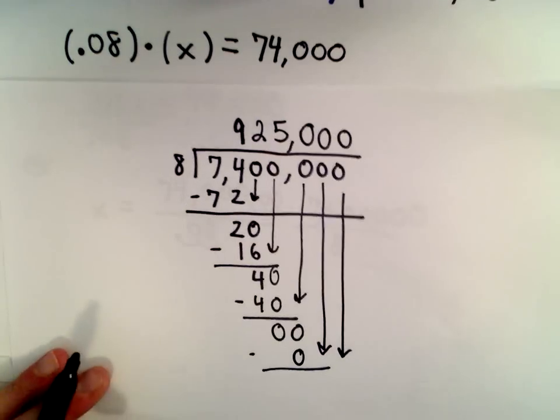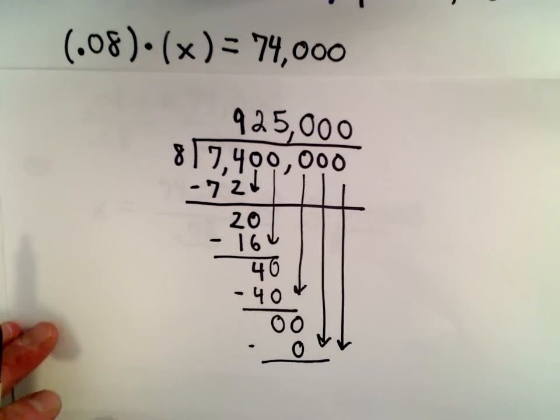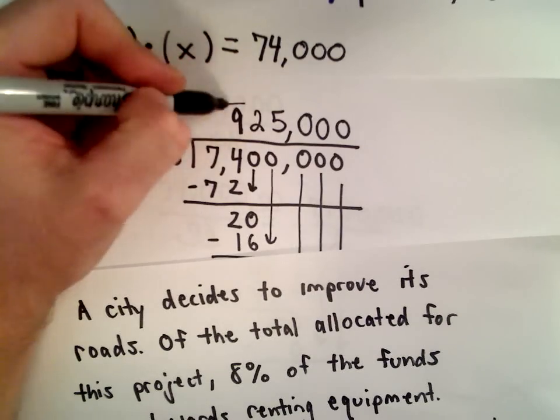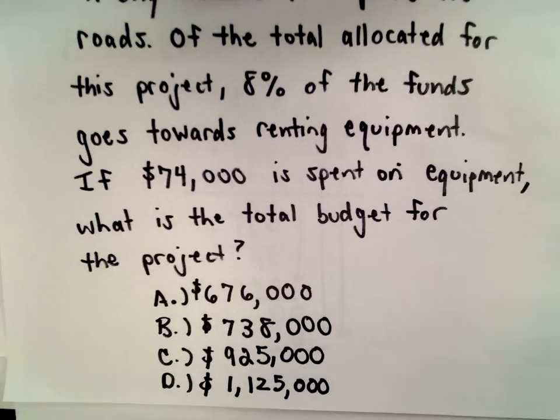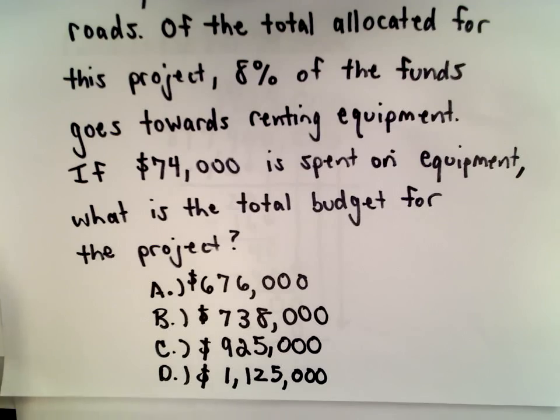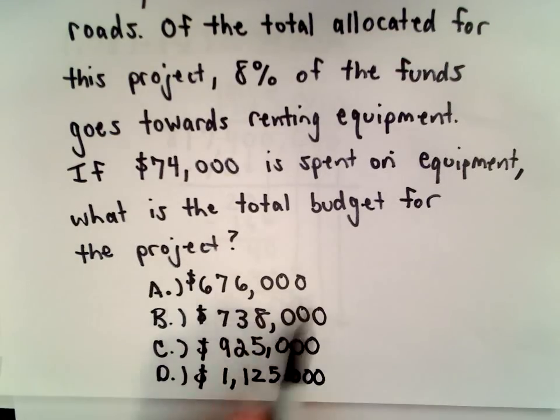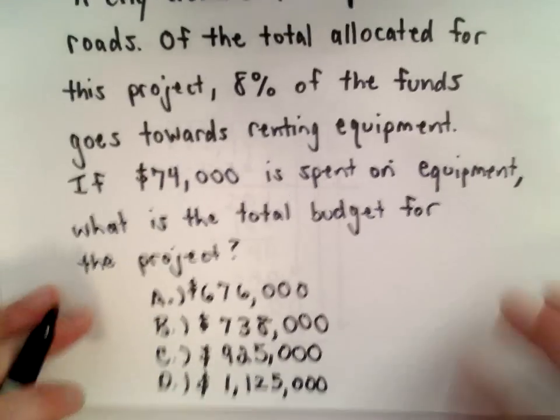Now, a couple things. Again, if this was one of those problems where you had an answer key or answer choices, I would stop as soon as I did eight goes into 74 and I got nine. I would stop, this is the benefit of having multiple choice. It's got to be answer C because that's the only one that starts off with a nine. So I would know immediately, answer C is correct, boom, I'm on to the next problem. I'm not wasting my time.